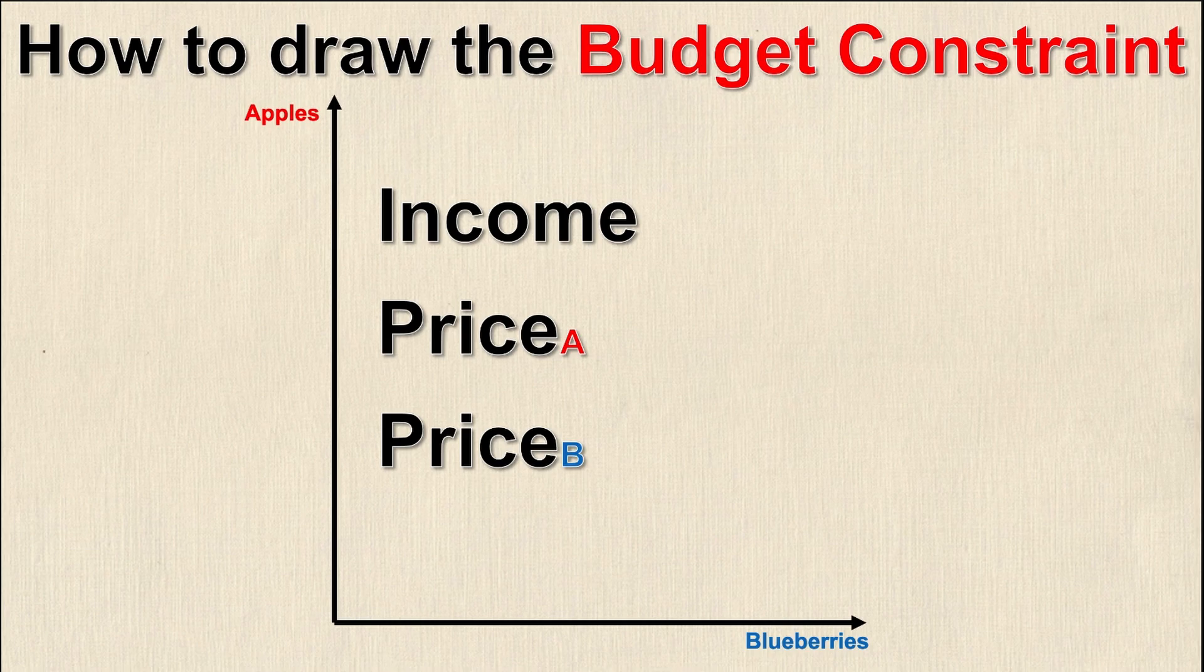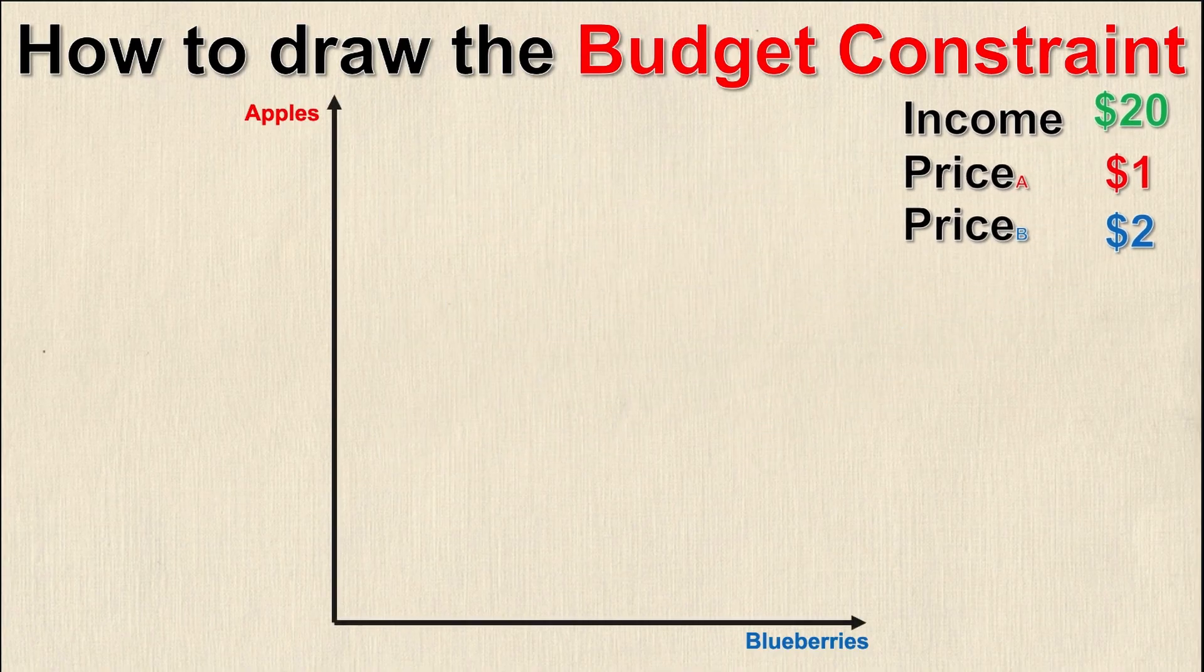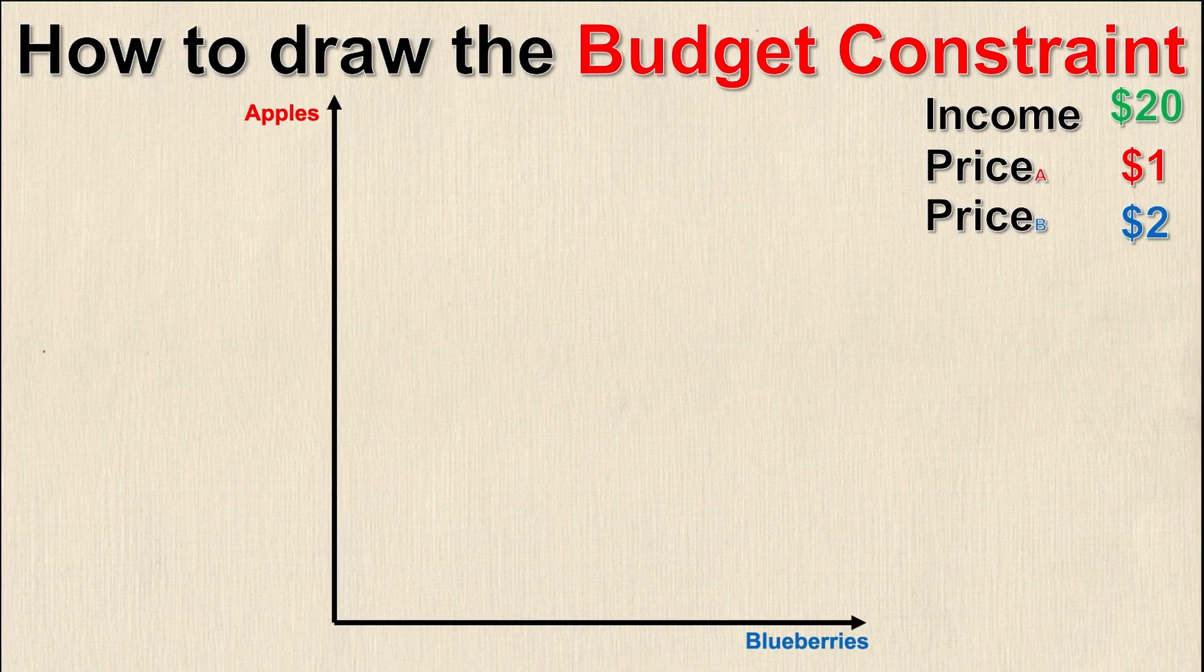These values need to be given, so let's give them to you. We have an income of $20, the price of apples is $1 per unit, and the price of blueberries is $2 per unit. Now that I have all this information, I need to start by looking at two key points, the intercepts.